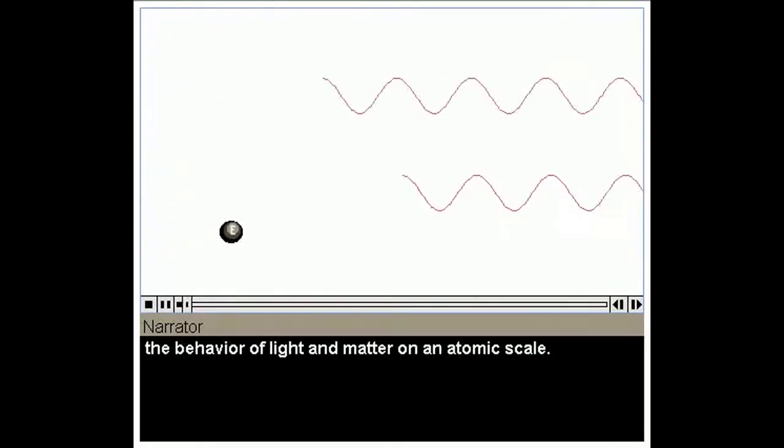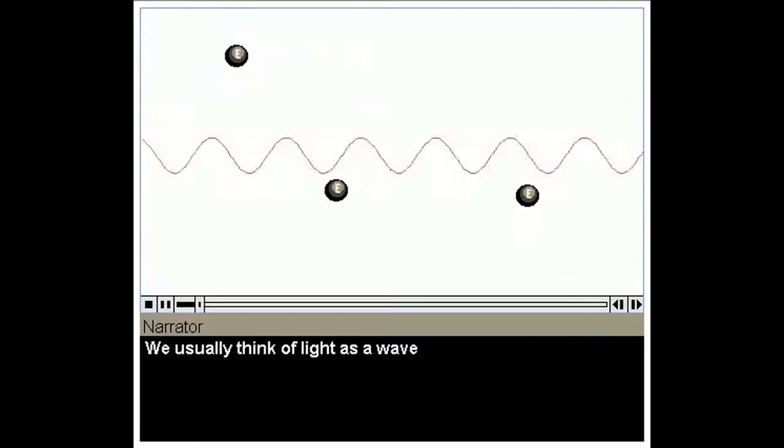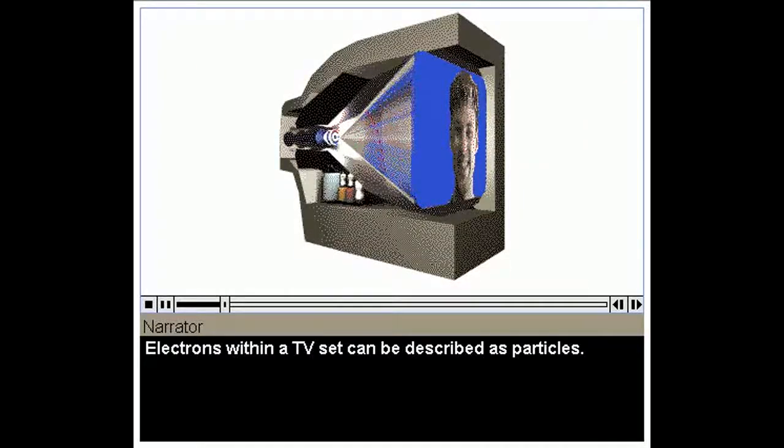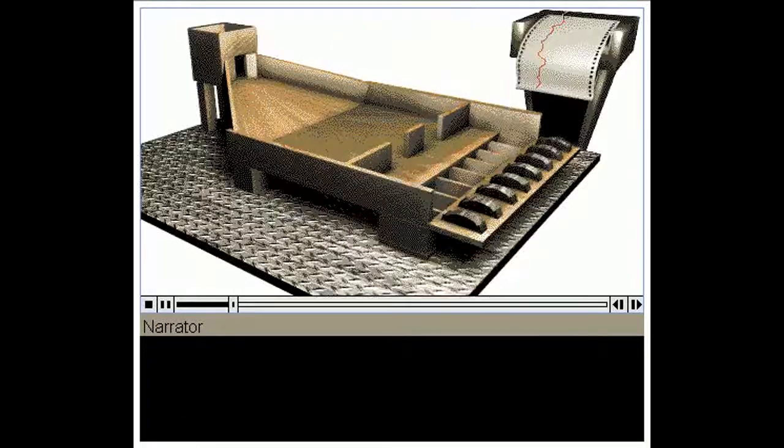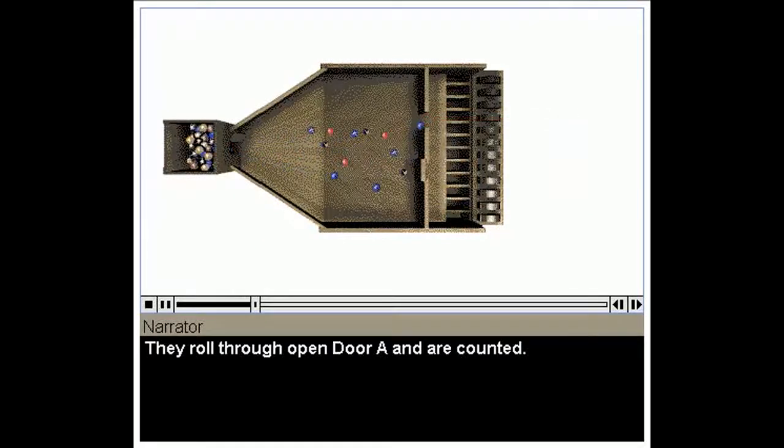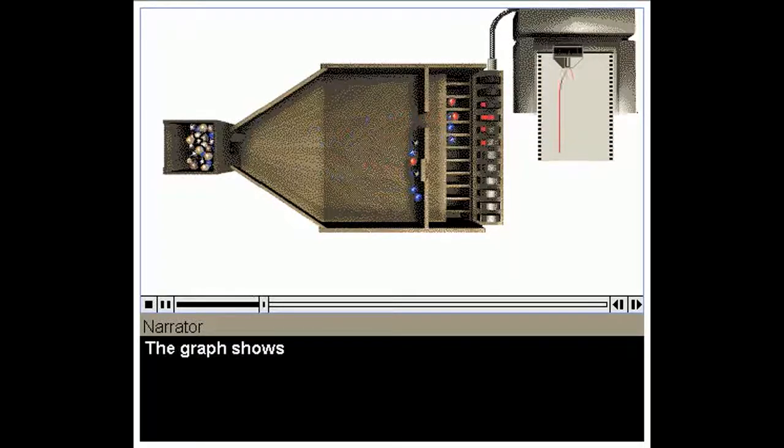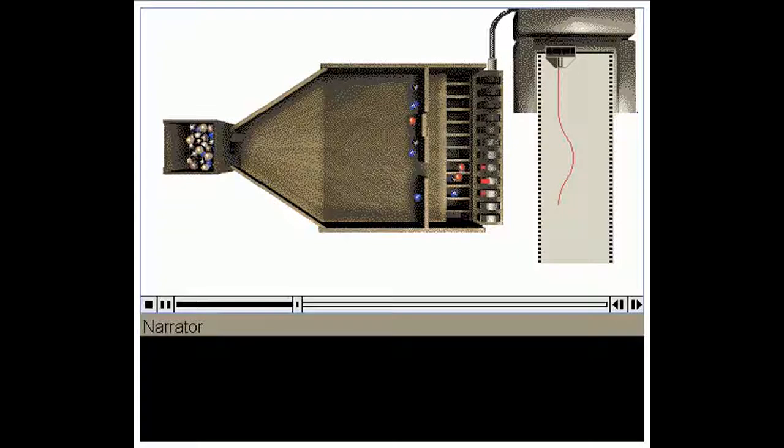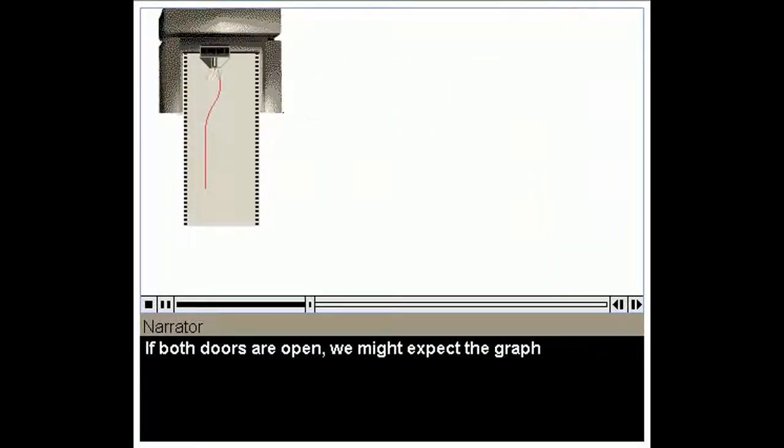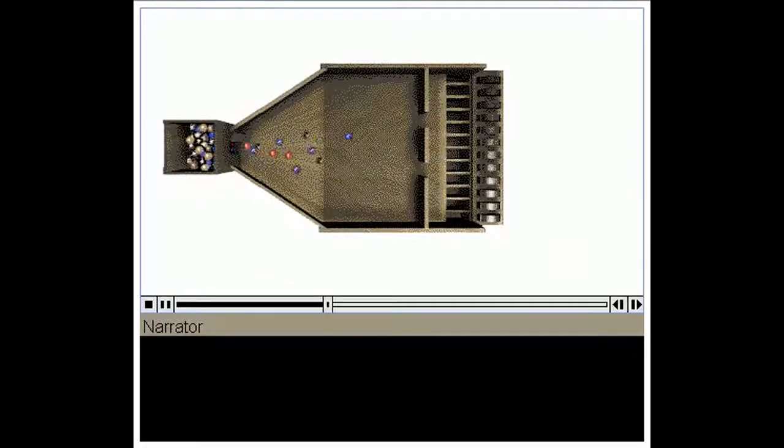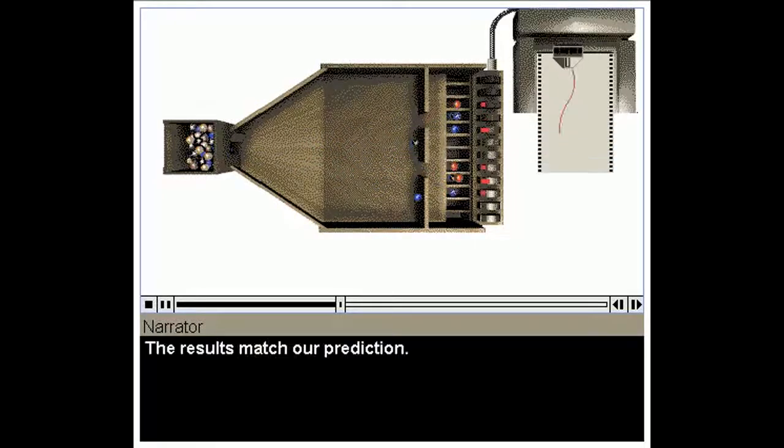Quantum theory describes the behavior of light and matter on an atomic scale. We usually think of light as a wave and electrons as particles. Electrons within a TV set can be described as particles. In other situations, electrons are better described as waves. Suppose we do an experiment using marbles to represent particles. They roll through open door A and are counted. The graph shows the greatest concentration of marbles near door A. A similar graph is produced when the marbles roll through door B. If both doors are open, we might expect the graph to look like the sum of the two previous graphs. Let's do the experiment. The results match our prediction.